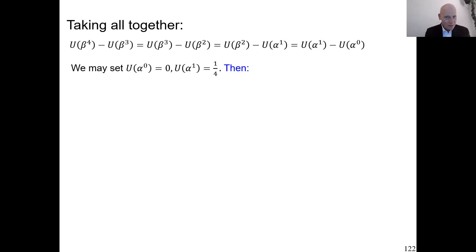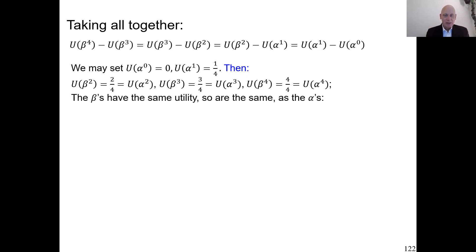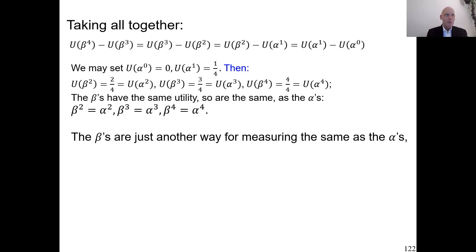If we use this scaling of utility — you can always do it, also under rank-dependent utility — then we get the betas have the same utilities as they had under expected utility. This means the generalization to rank-dependent utility doesn't change this fact. This fact is robust against violations of expected utility. We can also conclude that the betas have the same utilities as the alphas, so they must be the same. Your utility is strictly increasing, and this continues to hold under rank-dependent utility. The betas are just another way of measuring the same thing as the alphas.